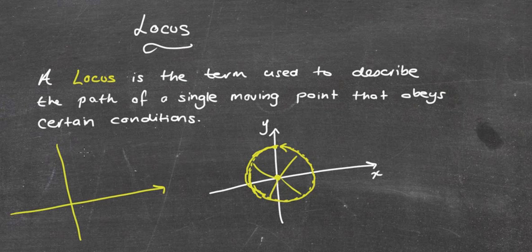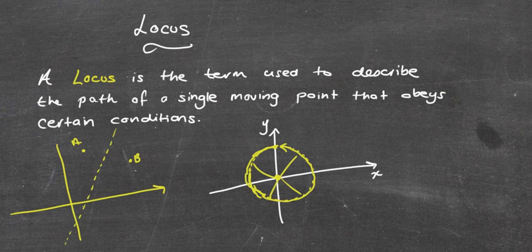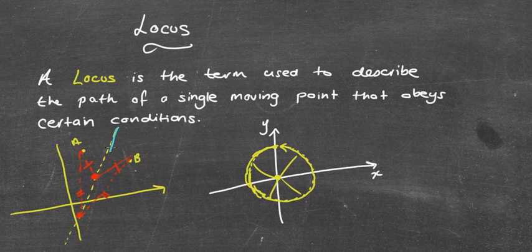It doesn't have to be a circle though. Another type of question gives you a point A and a point B and asks for the equation of the locus that moves so it's always the same distance from A and B. That basically means it's going to be a straight line, so when I measure the distance from any point to B and to A they're going to be the same value. The locus is that actual line going in that direction.